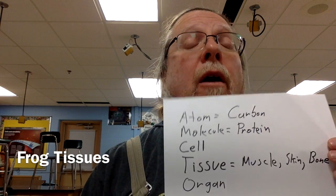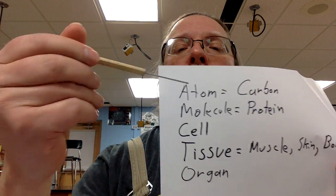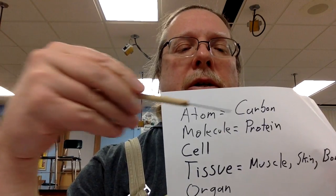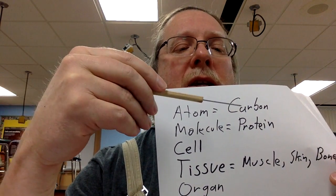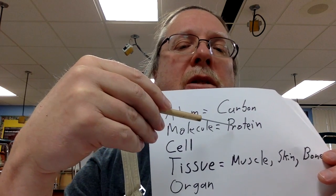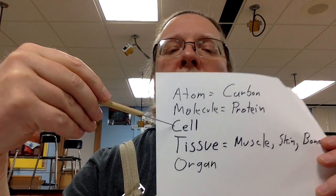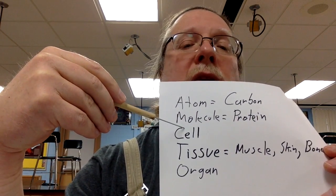The word of the day is tissue. We're trying to help you see an order or hierarchy to how living things are. We'll talk about atoms this year, including the atom critical for organic substances, carbon. Some of the molecules we have talked about and will continue to talk about will be proteins. We know that all living things are made of at least one cell.